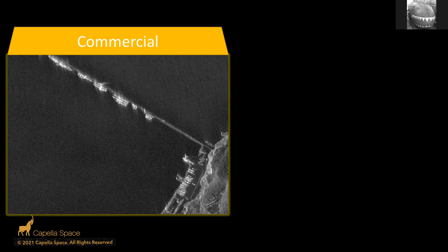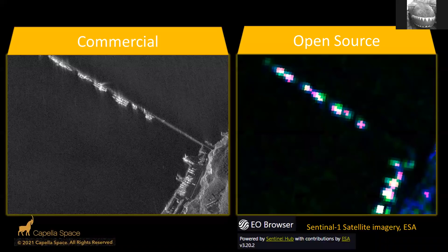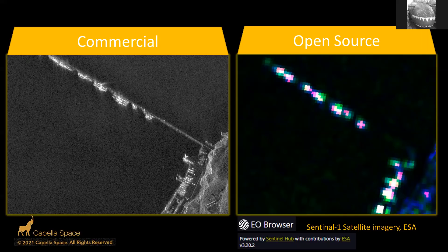There is another type of SAR satellite — Sentinel-1, owned by the European Space Agency — which takes the same images repeatedly, roughly once a week depending on location, sometimes more. This is open source because they make it freely available to the public. You can find it on EO Browser or the Copernicus Playground. The downside, as you can see clearly here, is that the resolution is much lower than Capella Space imagery, but it's still very powerful.